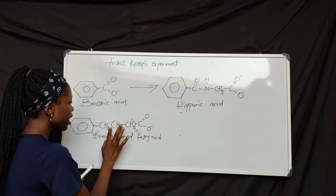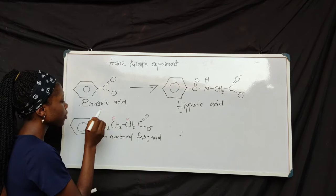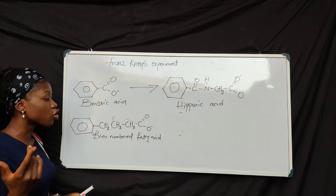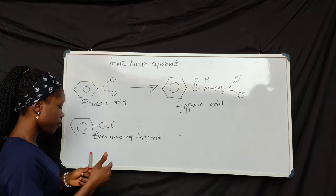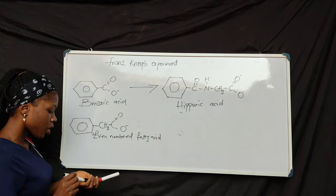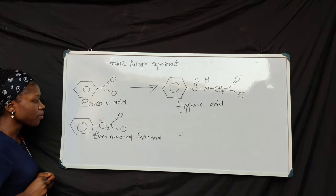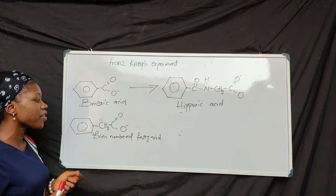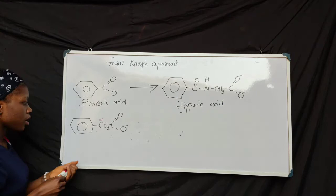Now, if this happens — remember, N is assumed to be one — this automatically becomes the alpha-carbon and this is the beta-carbon. If another oxidation takes place, it takes place on the beta-carbon again. The beta-carbon is oxidized to the carbonyl group. Now, looking at this structure, we have an alpha-carbon, but we don't have the beta-carbon. Knoop observed that because of the absence of a beta-carbon, there was no further oxidation. And now, this is phenylacetate.